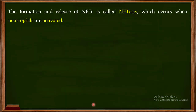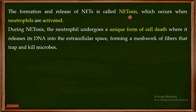The process by which NETs are formed is known as NETosis. So the formation and release of NETs is called NETosis, and this NETosis occurs when neutrophils get activated. During NETosis, neutrophils undergo a unique form of cell death where they release their DNA into the extracellular space. This release of DNA forms a meshwork of fibers responsible for trapping and killing microbes.